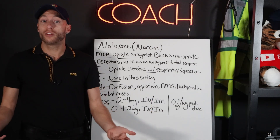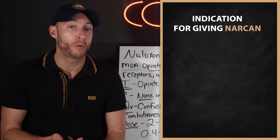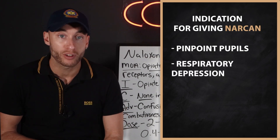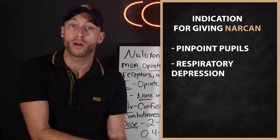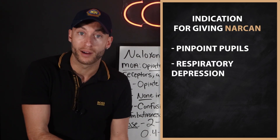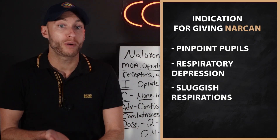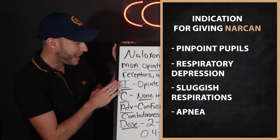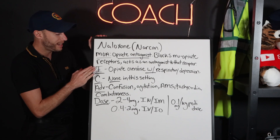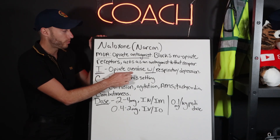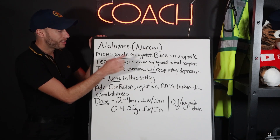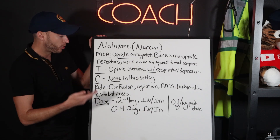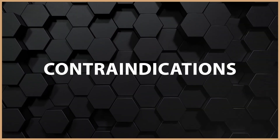Other things you may see include pinpoint pupils. Respiratory depression means they have a slow respiratory rate — sluggish respirations. That's what we're looking for. That's an indication in the setting of opiate overdose. This is why we give it — it's an antidote for opiates.